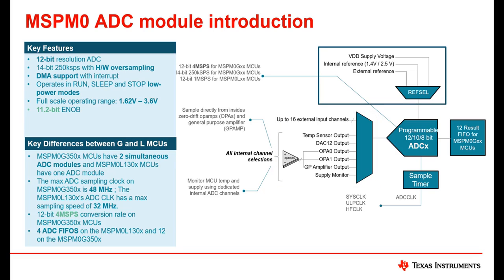For the reference voltage selection, MSPM0 provides an internal reference voltage of 1.4 volts or 2.5 volts. The ADC can also use an external reference voltage or the supply voltage VDDA as a reference.